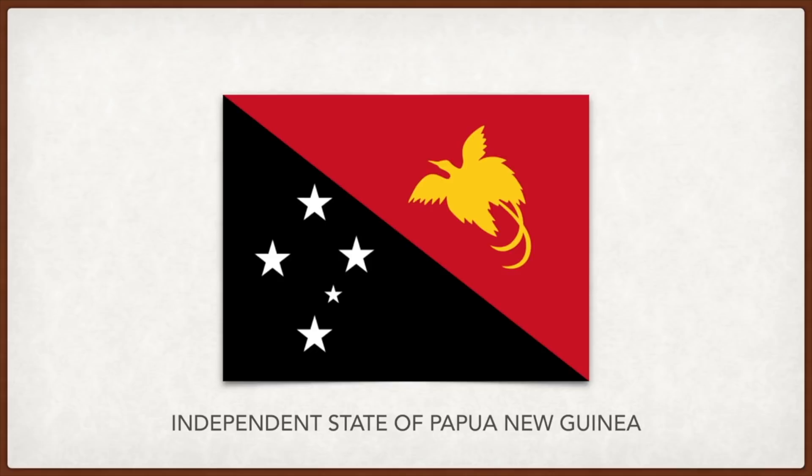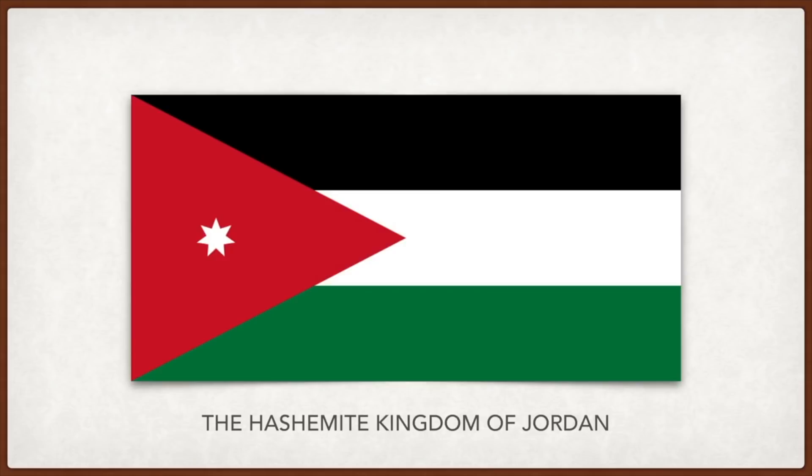Jordan: the colors are pan-Arab colors. The white star stands for the unity of the Arab people and the seven verses of the first surah in the Quran, the seven hills on which Amman the capital was built, and faith in one god, humanity, humility, national spirit, virtue, social justice, and aspiration.